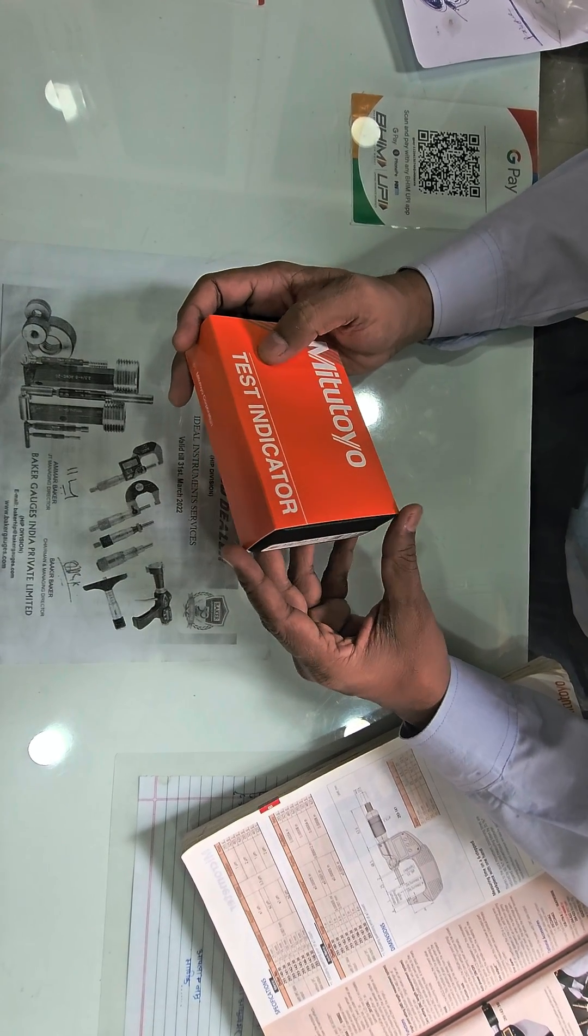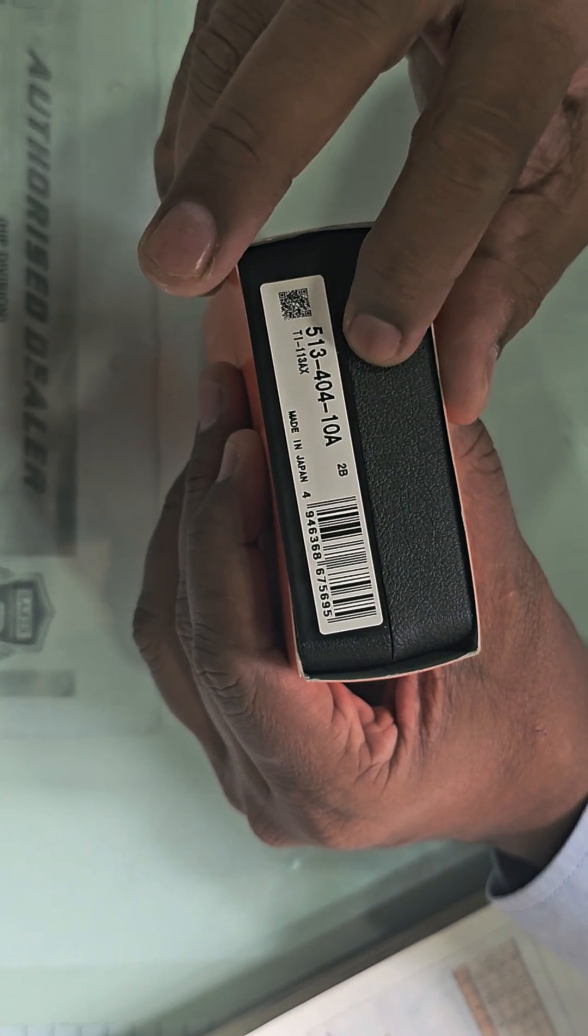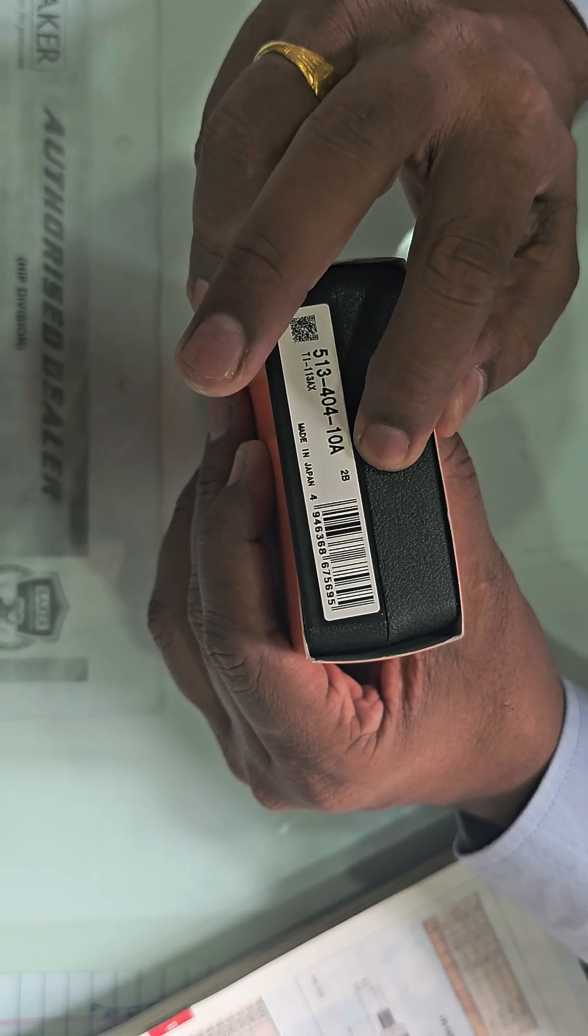It is also called puppy dial or lever dial. It is Metatio order number 513404-10A.